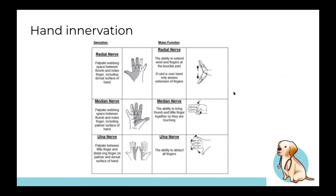For hand innervation: the radial nerve covers the dorsum of the hand; the median nerve covers the thenar eminence side; and the ulnar nerve covers the hypothenar eminence. Motor function follows the same logic based on where each nerve runs and what muscles it supplies — a handy chart summarizes what happens in the hand with each nerve.